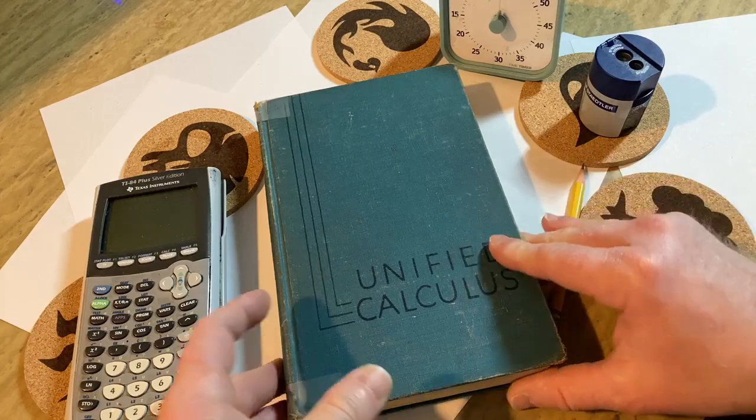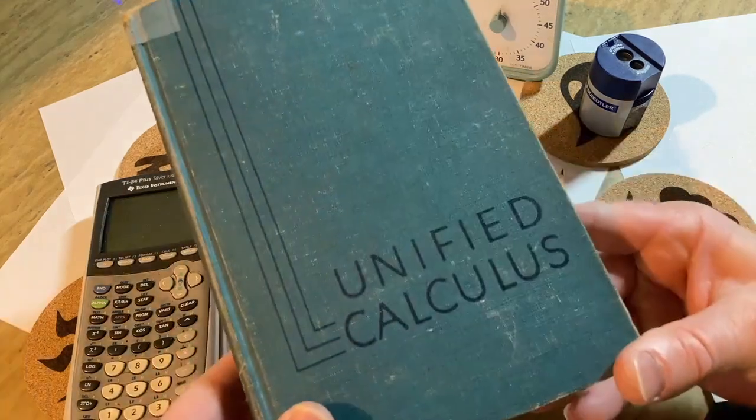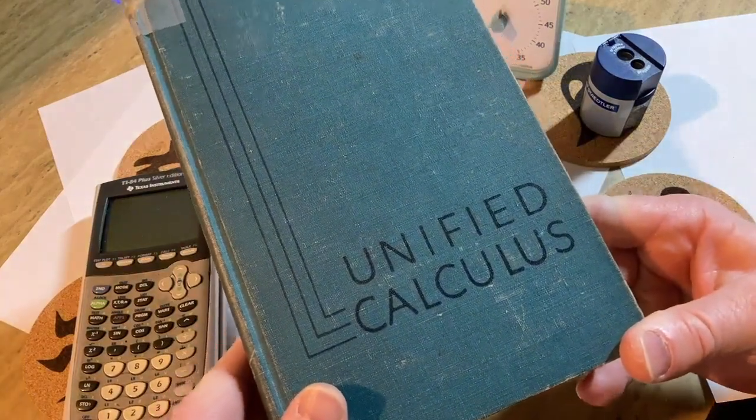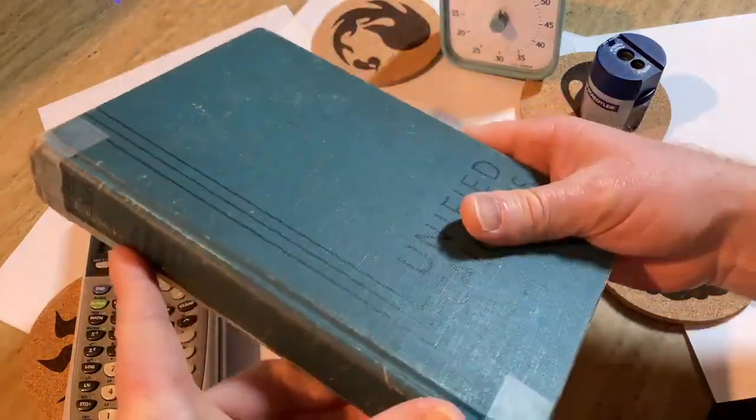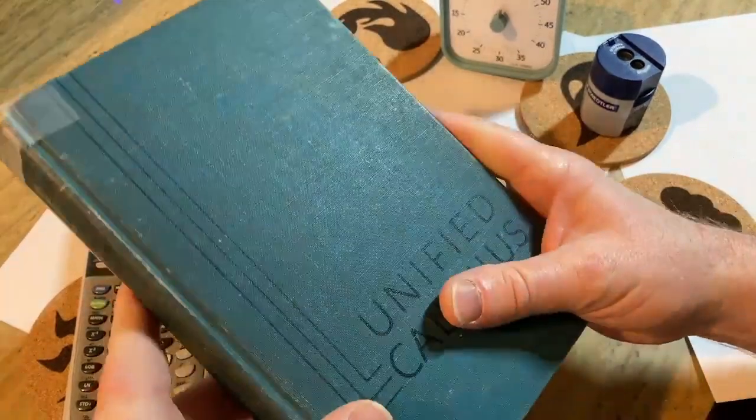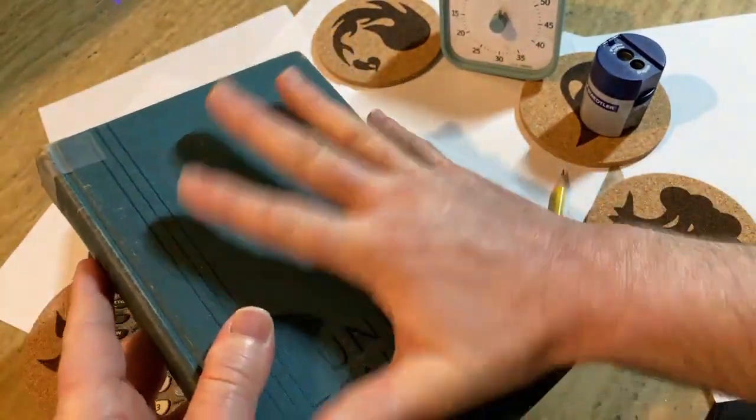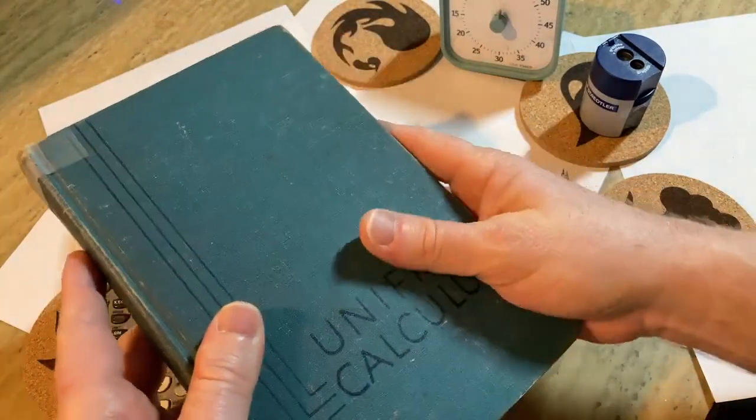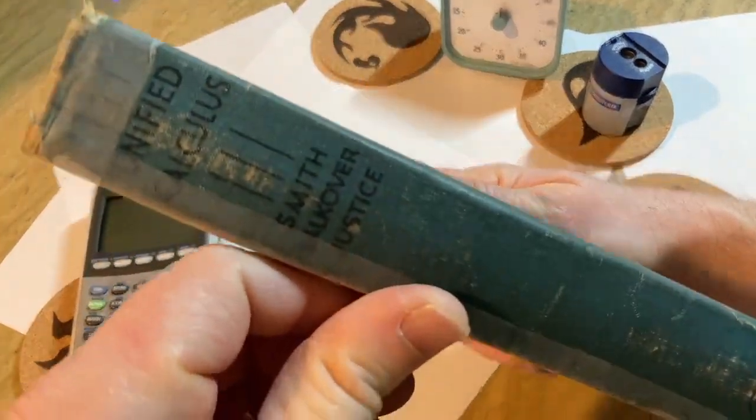Hello, in this video I thought we would take a look at this really old calculus book that I have. It's called Unified Calculus. And look how small it is compared to the modern books like the ones by Stewart and Larson. It's just a really small book, and it's got tons of mathematics.